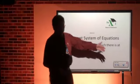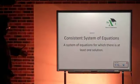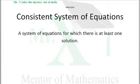Hi, Mr. X with the glossary term: consistent system of equations. It's a system of equations for which there is at least one solution. So from this you might infer that an inconsistent system of equations would be a system of equations for which there is no solution.